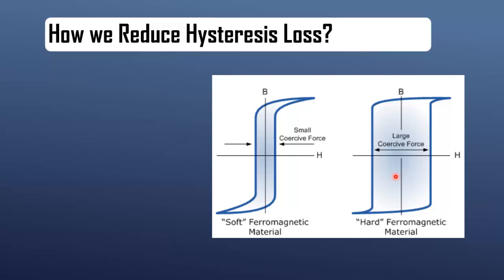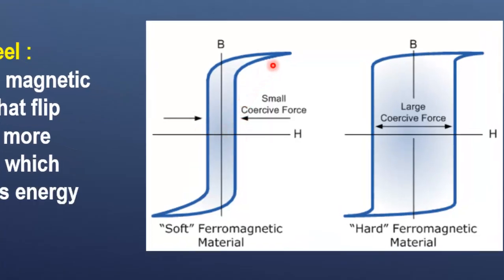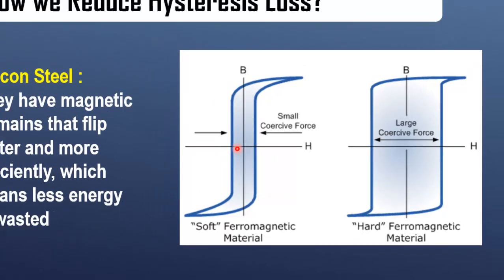To reduce hysteresis loss, we choose materials that have low hysteresis characteristics, like silicon steel. These materials respond more quickly to the changing magnetic field, which means less energy is lost.